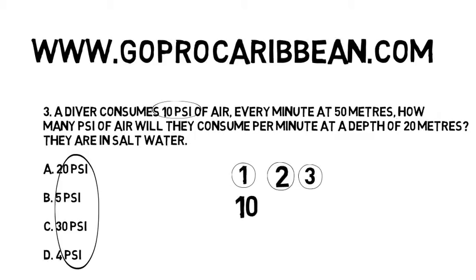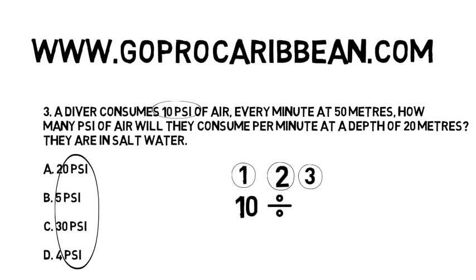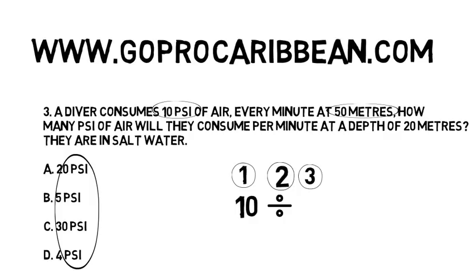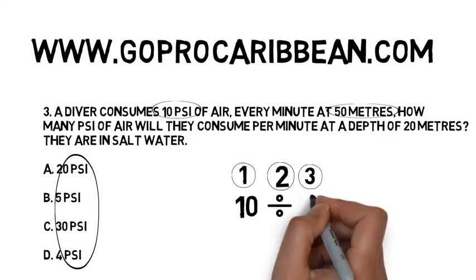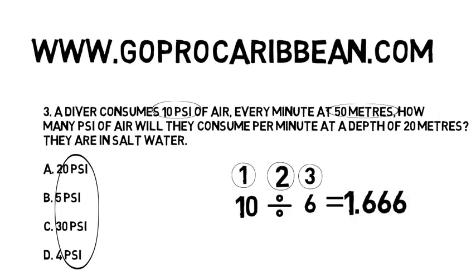Now we look at multiply or divide. What will happen when we go to the surface? Well it's asking about air consumption in psi. Are we going to breathe through more psi at the surface than we would at depth, or less psi? Hopefully you're thinking I'm going to breathe through less air at the surface than I would at depth — so we divide. Step three is always look at the depth; this time we're looking at the initial depth, the starting depth. The starting depth in the question is 50 meters. Using the depth pressure chart we know that the atmospheric pressure at 50 meters would be 6 atmospheres. We can calculate now how many psi of air this diver would breathe at the surface — it's only 1.6 psi per minute.